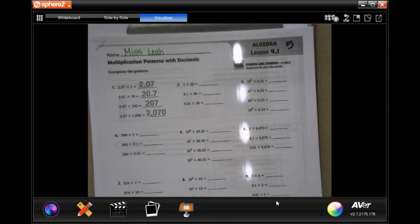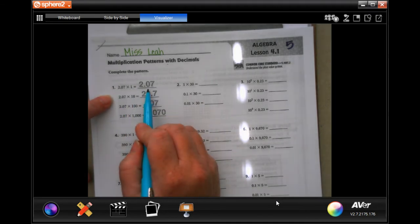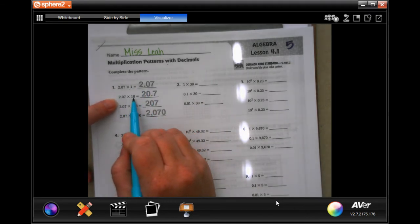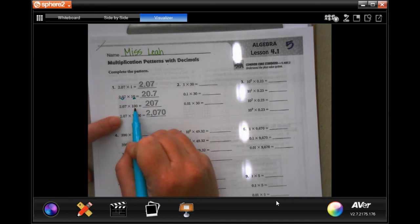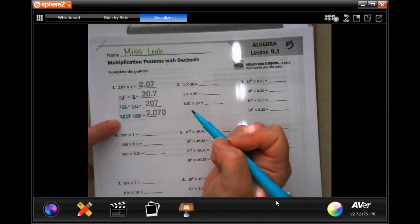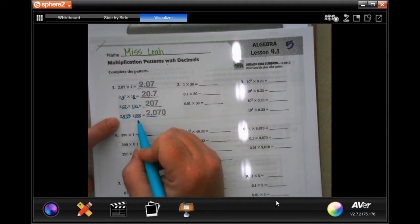So I just want to show you on number one, when it's multiplying it by one, it doesn't change at all. When it's multiplying it by 10, it has one zero, so it moved over one time. Multiplying by 100 has two zeros, moved over twice. Multiplied by three zeros, and it actually had to fill in a zero. So that's how you do those ones.